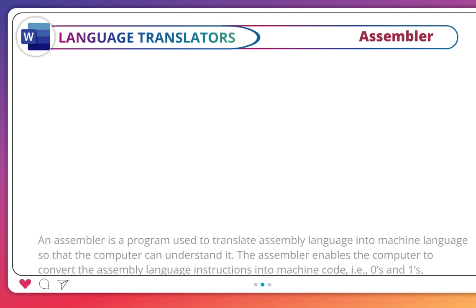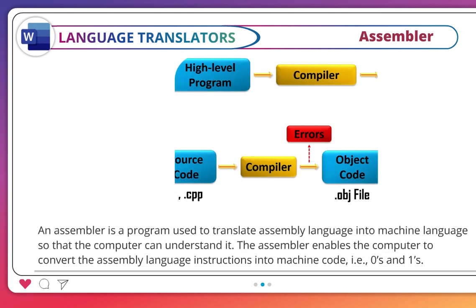An assembler is a program used to translate assembly language into machine language so that the computer can understand it. The assembler enables the computer to convert the assembly language instructions into machine code — that is, zeros and ones.